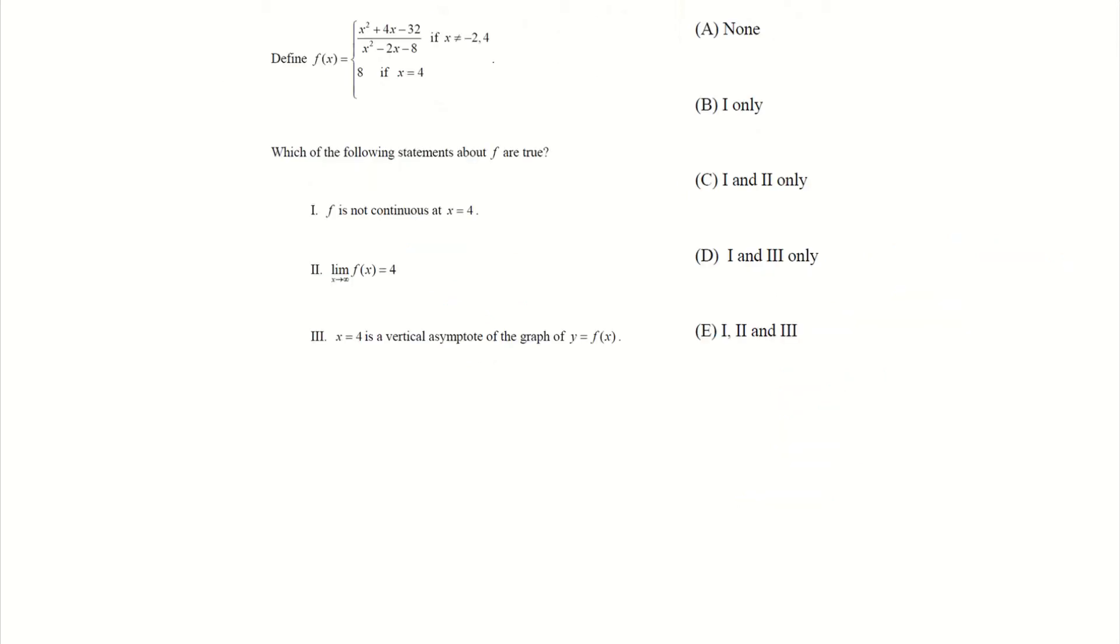Okay, we have one last question here involving piecewise, and this is a which of the following statements are true type of question. So we'll go through this one by one, and we'll see which ones are true. First of all, it says f is not continuous at x equals 4. Okay, well, at x equals 4, it appears to be defined at 8, but that is only at x equals 4, which means otherwise this function applies for on the other two sides of 4. So I need to know, does the limit as x approaches 4 of our function exist? And then on top of that, I need it to equal 8.